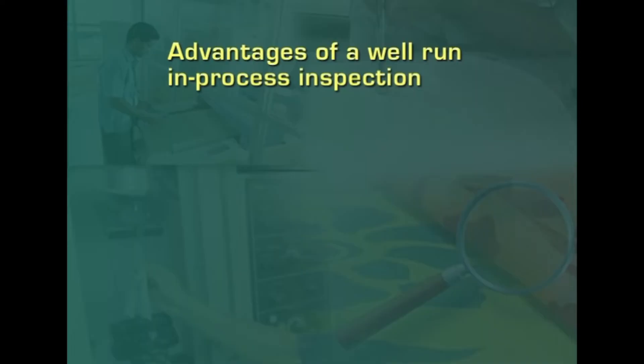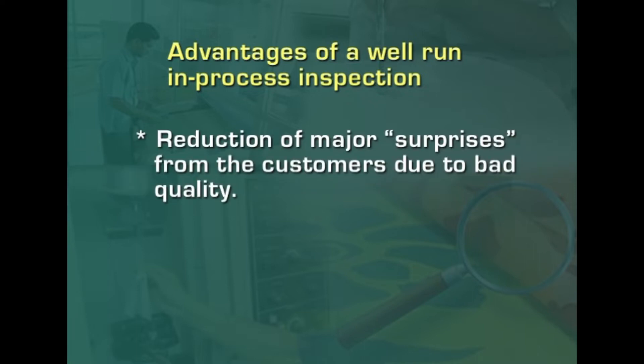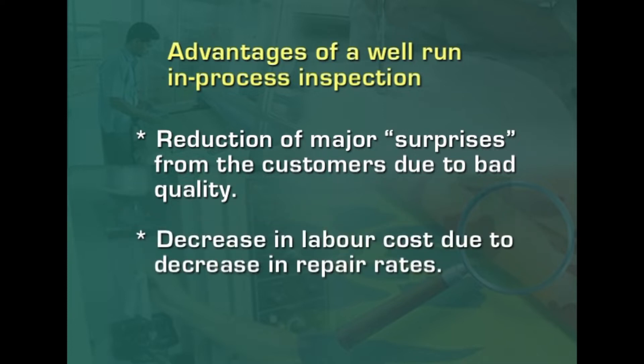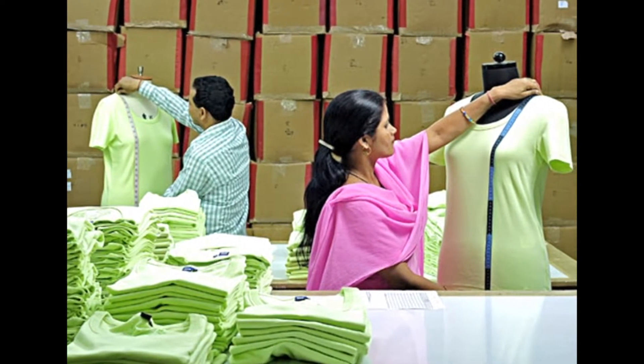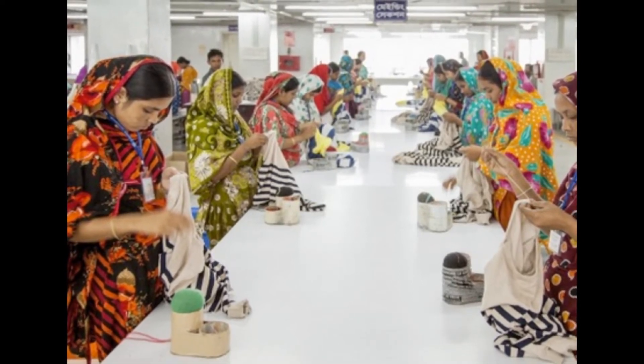What are the advantages of a well-run in-process inspection? There is a reduction of major surprises from customers due to bad quality, and a decrease in labor cost due to decrease in repair rates. These advantages are generally derived from the fact that operators, workers, and supervisors are constantly reminded that the company has a specific quality level to meet, just by the very presence of inspectors in their section on a daily basis. Each worker realizes their work is subject to inspection at any time, so quality of work will definitely improve. The data obtained can be effectively analyzed by production supervisors and plant managers in correcting problems or improving quality.